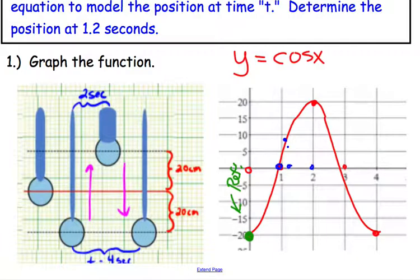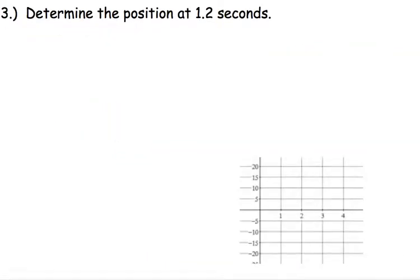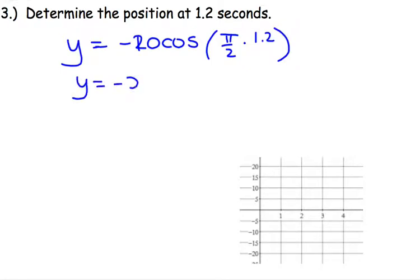So how we check it is we can do this algebraically. We can use that equation, y or D of T, negative 20, cosine of pi over 2, and then 1.2. Now we're going to have to use our calculator to complete this. So negative 20, cosine, 1.2 pi over 2. We're going to have to plug this into our calculator.